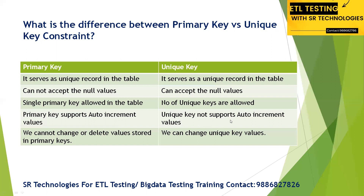A primary key supports auto-increment values, but a unique key does not support auto-increment values. Also, we cannot change or delete the value stored in a primary key in real-time scenarios, but when it comes to a unique key, you can change the unique key values.